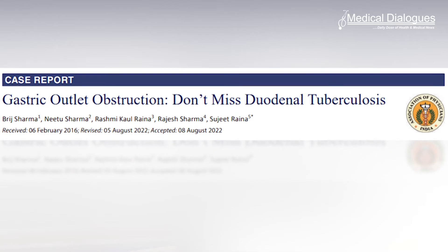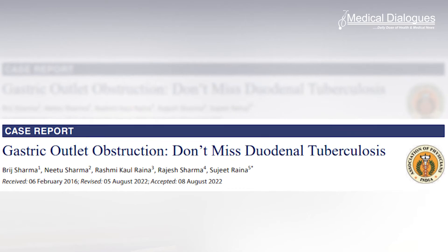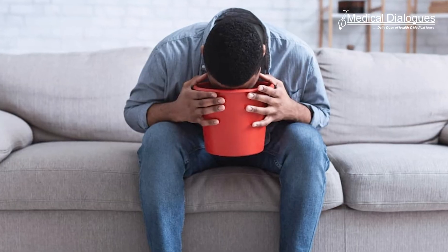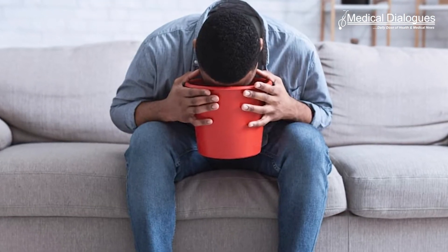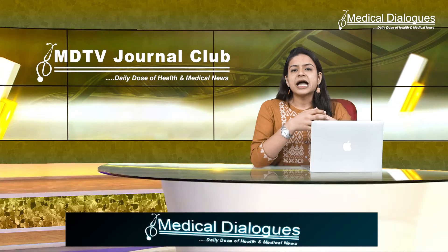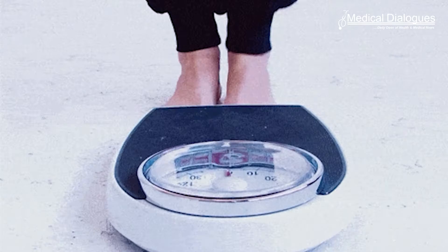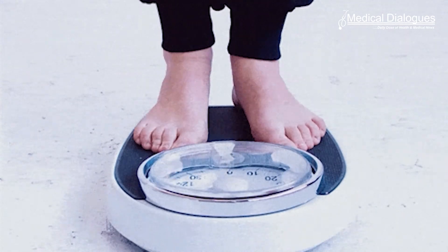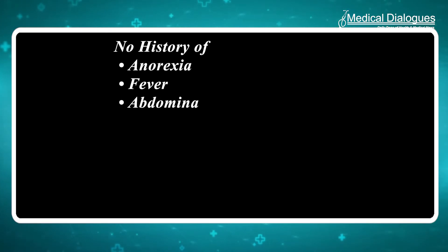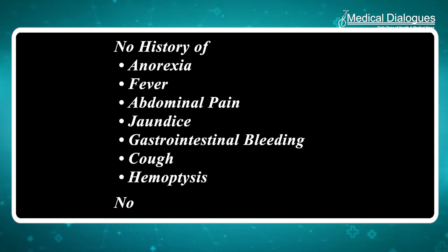The present study reports a case of a young man with duodenal tuberculosis — a 32-year-old male who presented with recurrent vomiting for six months. Vomiting mostly occurred after meals; the vomitus was non-bilious and contained ingested food residue. There was a history of weight loss, but no history of anorexia, fever, abdominal pain, jaundice, gastrointestinal bleeding, cough, or hemoptysis.